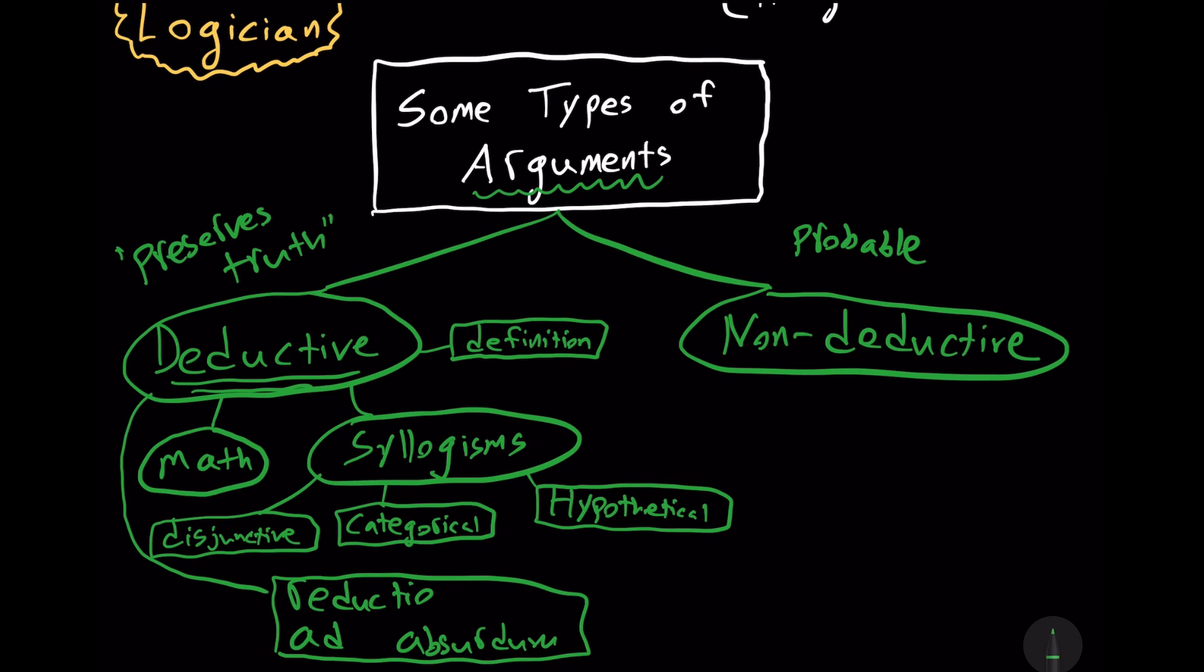But because that assumption leads to a contradiction, and contradictions cannot be true, that assumption must be false. It's a very cool, very powerful type of reasoning.